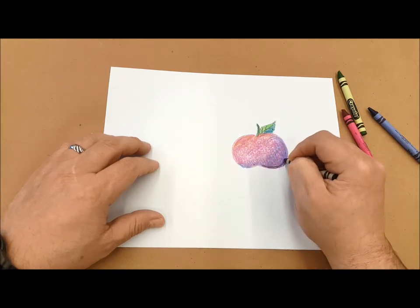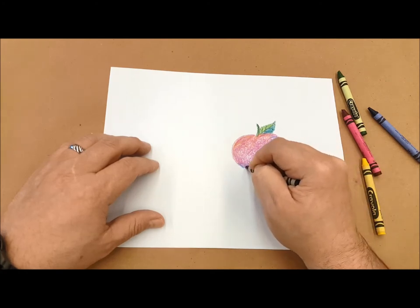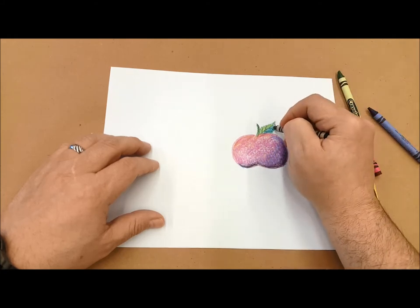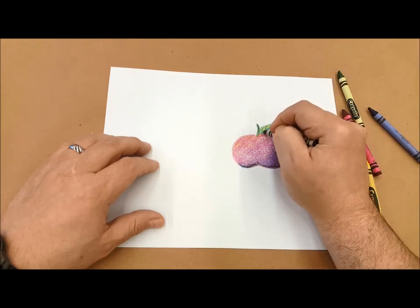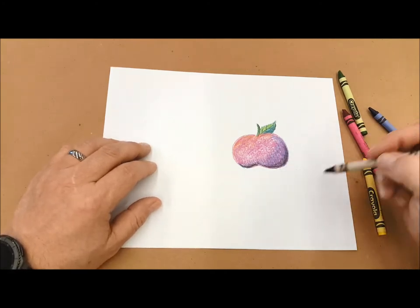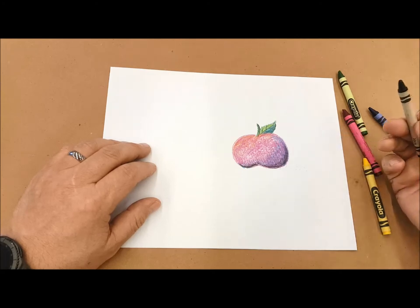I'm going to use a little black to even intensify my shadows even more. So by blending my colors, by coloring in neatly, I can get a really nice effect out of regular old crayons.